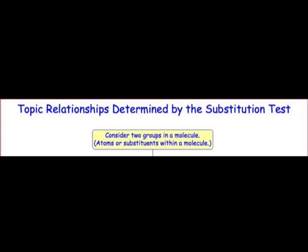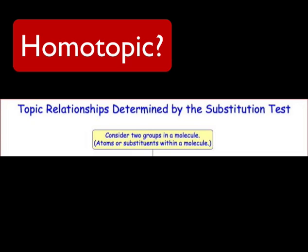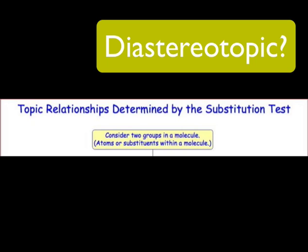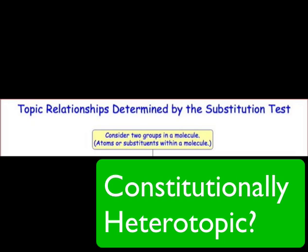We are now ready to learn how to classify stereochemical environments in a molecule — the so-called topic relationships that we discussed in the previous webcast. We want to conclude whether a pair of groups are homotopic, enantiotopic, diastereotopic, or constitutionally heterotopic.